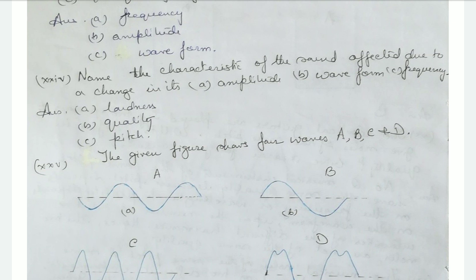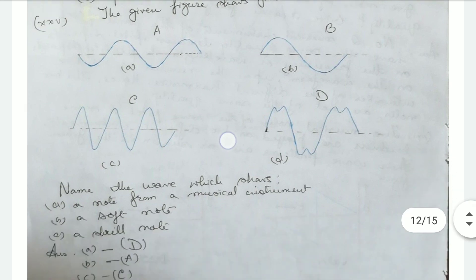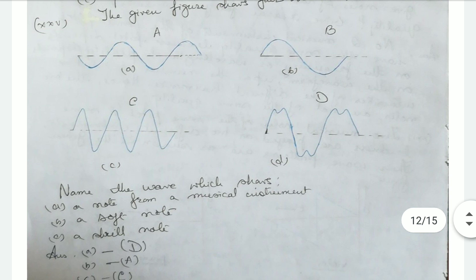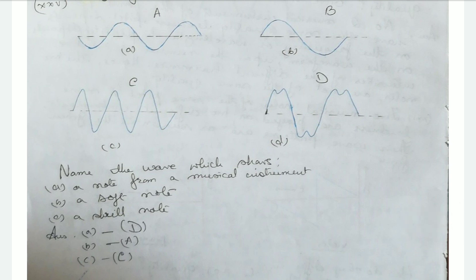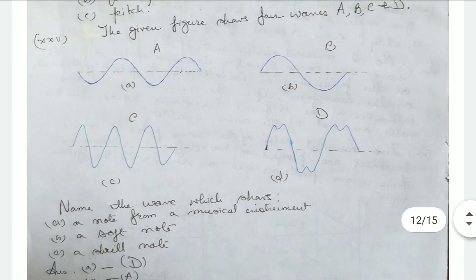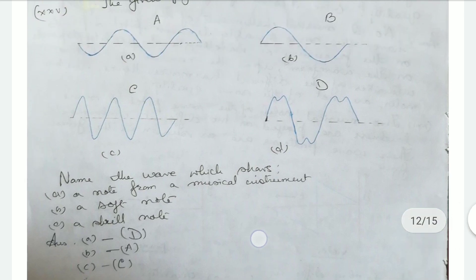Name the characteristic of sound affected due to a change in its amplitude: loudness. Waveform determines quality. Frequency determines pitch. The given figure shows four waves A, B, C, and D. The wave from a musical instrument is D, the soft note is A, and the shrill note is C — a shrill note has more frequency so the crests and troughs are very close.